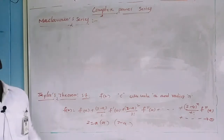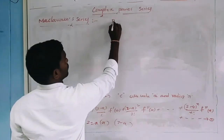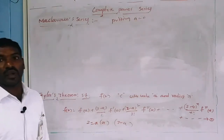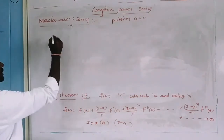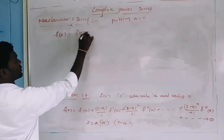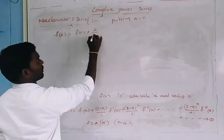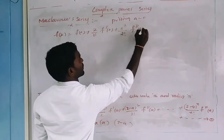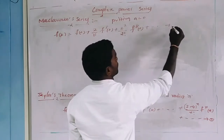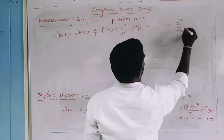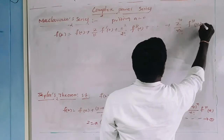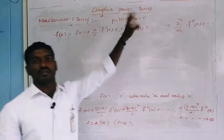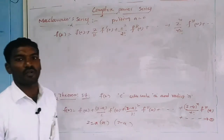By putting A equals 0 in the Taylor series, we get the Maclaurin series: F of Z equals F of 0 plus Z by 1 factorial into F-dash of 0, plus Z square by 2 factorial into F-double-dash of 0, plus and so on, plus Z power n by n factorial into the n-th derivative of 0, plus and so on. This is known as the Maclaurin series about the point Z equals 0, in powers of Z.